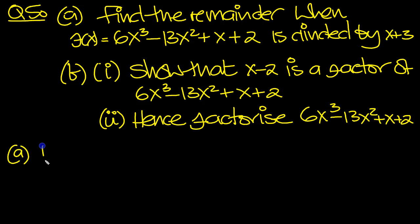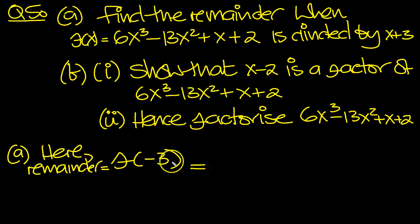So part a, so here. We need to put in f of minus 3, don't we? So that's the remainder. Equals f of minus 3, which equals, put minus 3 in here, 6 times minus 3 cubed, minus 13 times minus 3 squared, plus minus 3, plus 2.